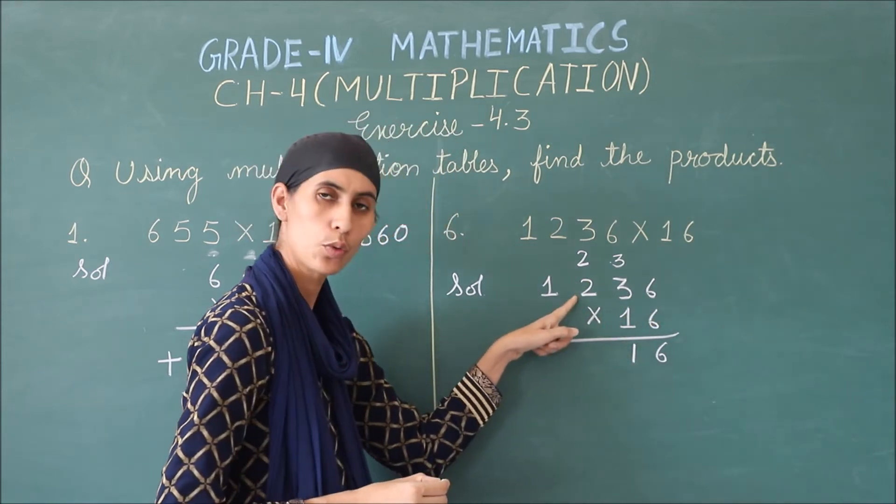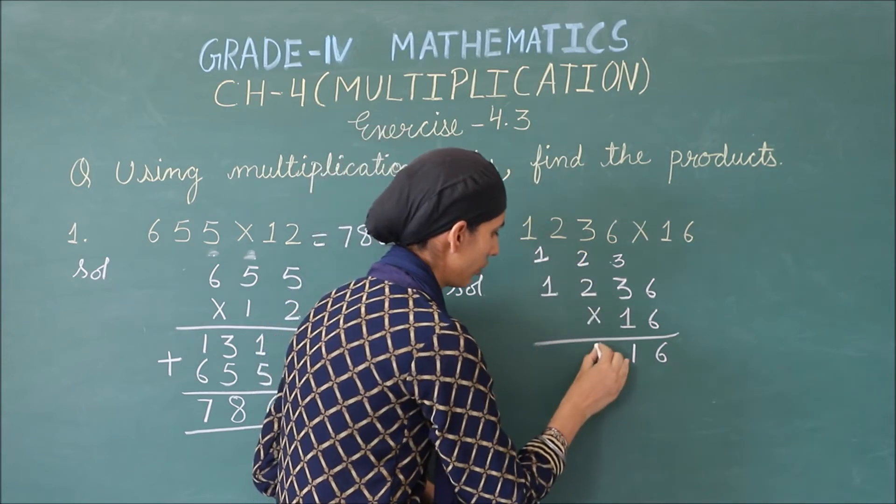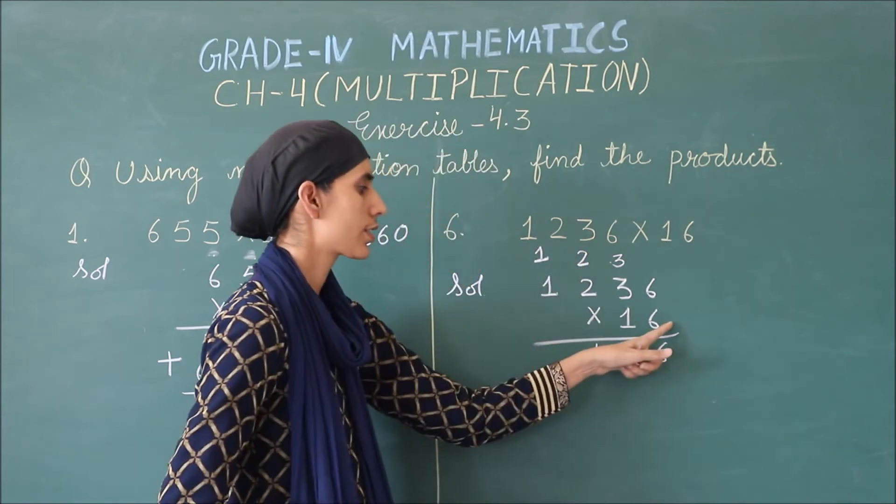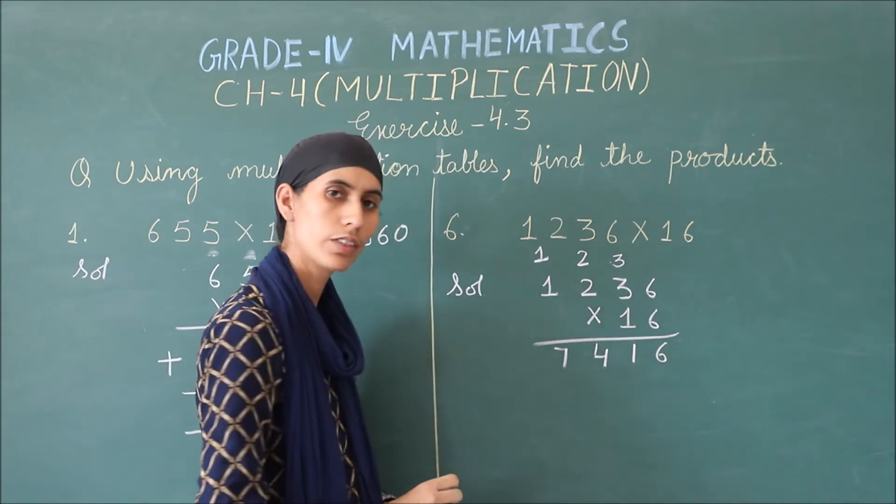Then, 6 times 2 are 12. 12 plus 2 is 14. Then, 6 times 1 are 6 plus 1 is 7.